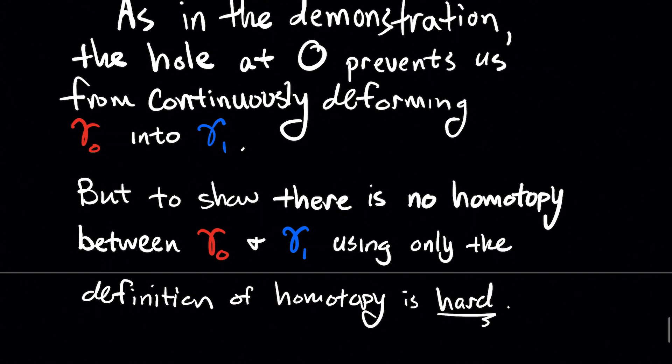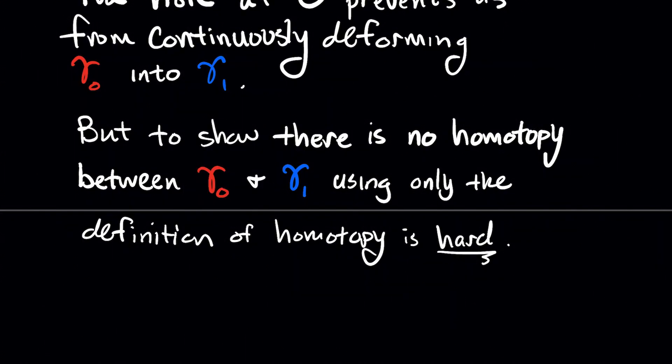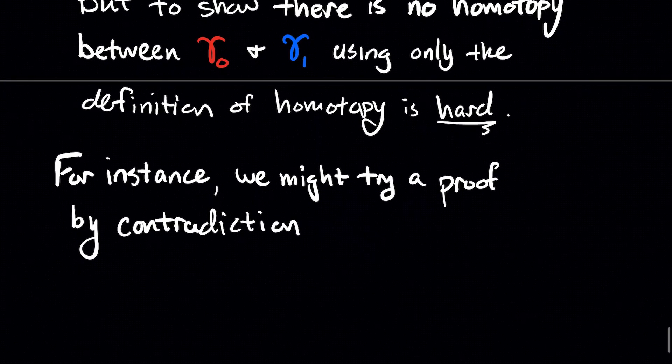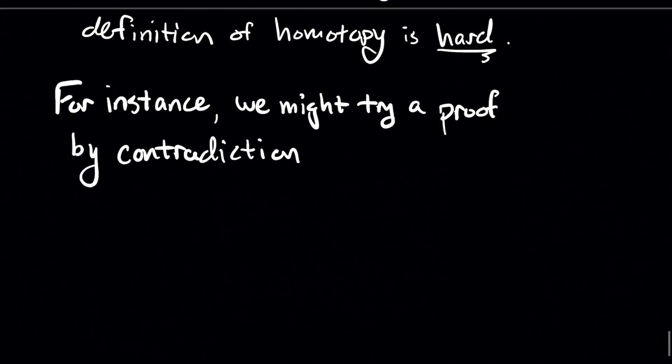But in order to show that there's no homotopy between these two, using only the definition of what a homotopy is, that's kind of hard. So this is an instance where the video made it look intuitive. Yeah, you can't get past that hole. You get stuck. It's snagged. But trying to put this to symbols is kind of a hard problem. And for instance, we might try a proof by contradiction.